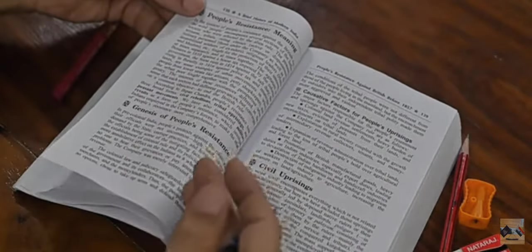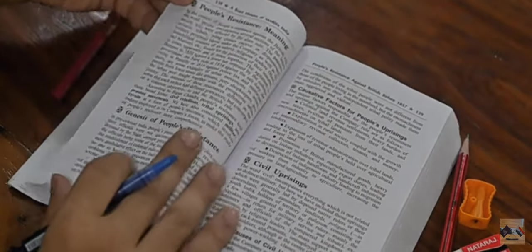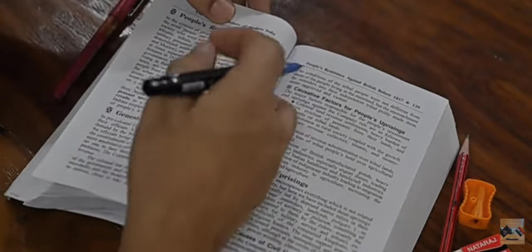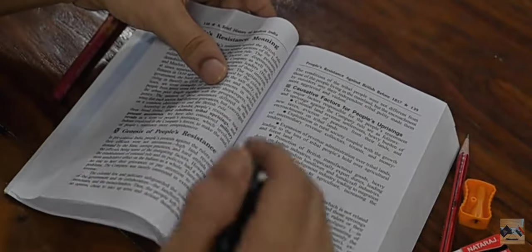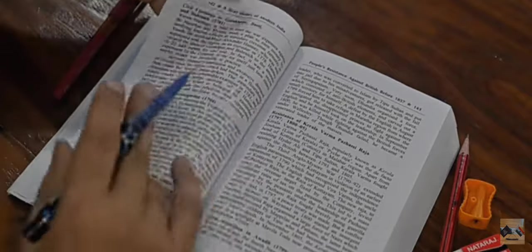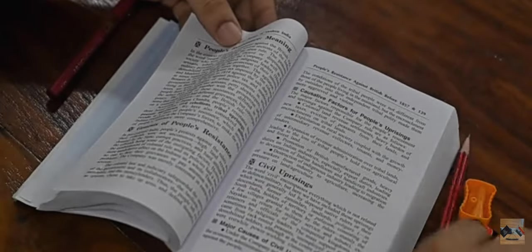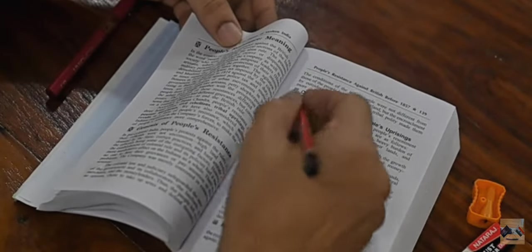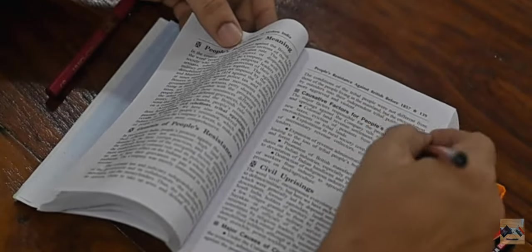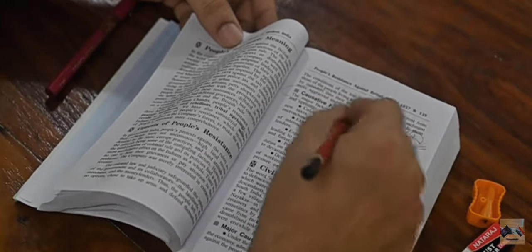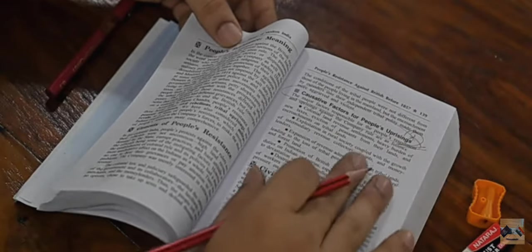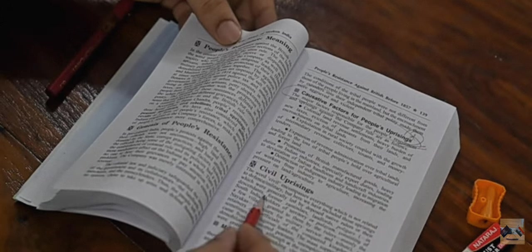So here if you read the chapter, it's very well written. They have given the meaning of the people's resistance, what is the genesis, how it started, what are the causes or the reasons, and then they have given major different kinds of uprisings. As you go through this chapter, you need to make some notes. You can make notes here on the margins. You can mark it like this is important, right? Instead of highlighting, you can mark it like this is important and put a sticky here, so that way you will remember. Similarly, you can underline some important parts.